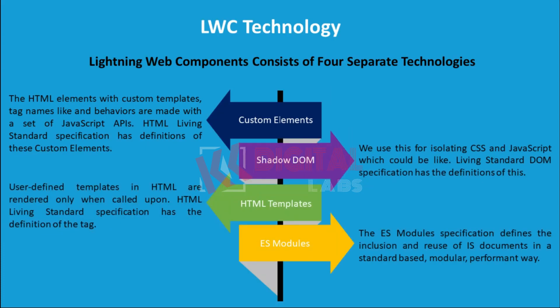Lightning Web Components consist of four separate technologies. Custom Elements: HTML elements with custom templates, tag names, and behaviors are made with a set of JavaScript APIs. The HTML Living Standard Specification has definitions of these custom elements. Shadow DOM: We use this for isolating CSS and JavaScript. The Living Standard DOM Specification has the definitions of this.